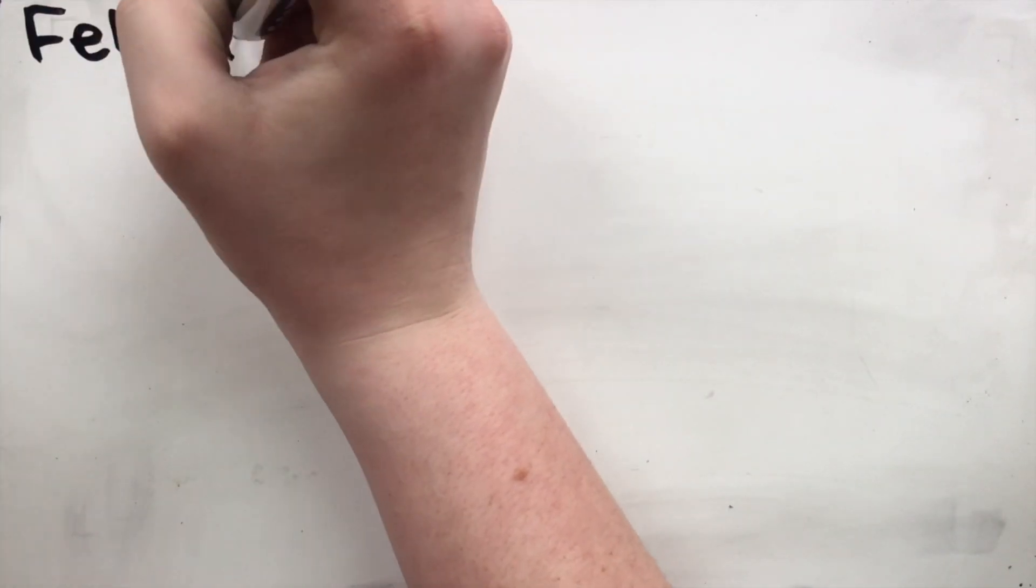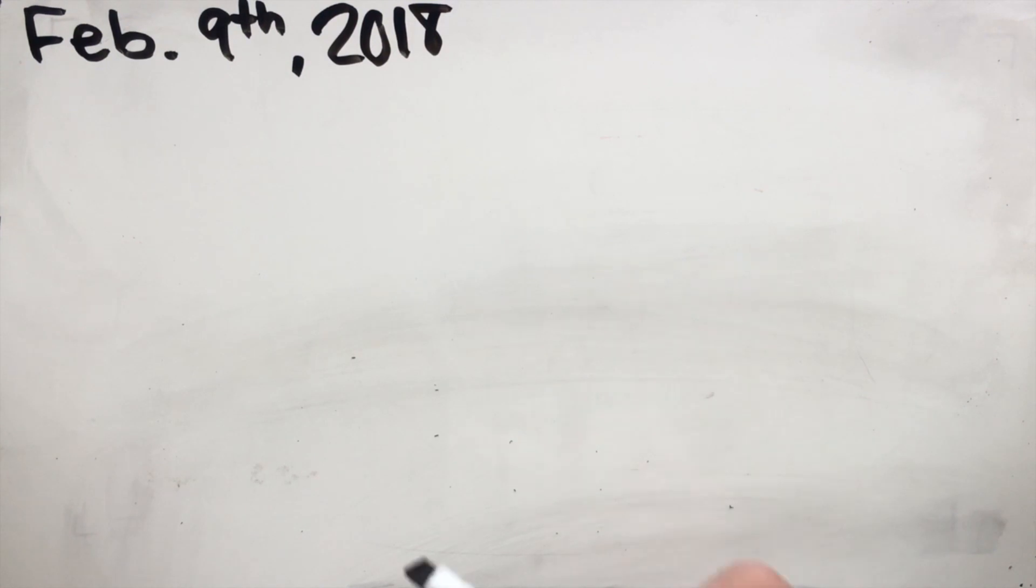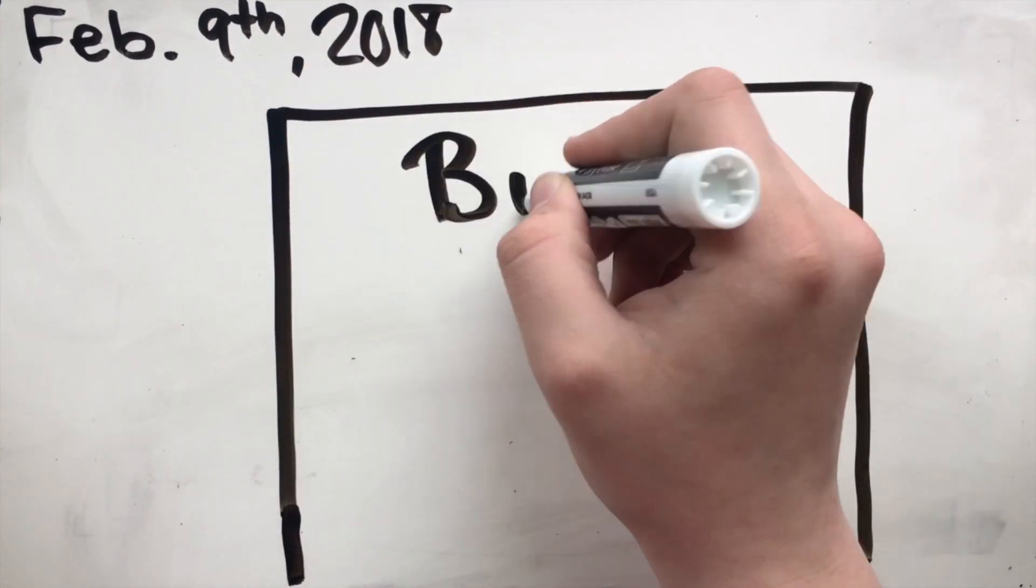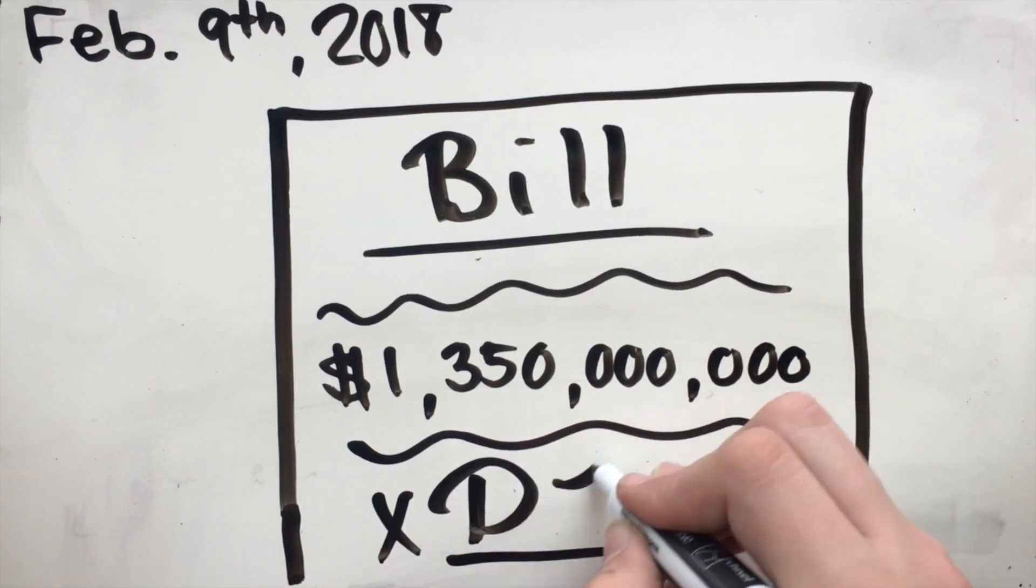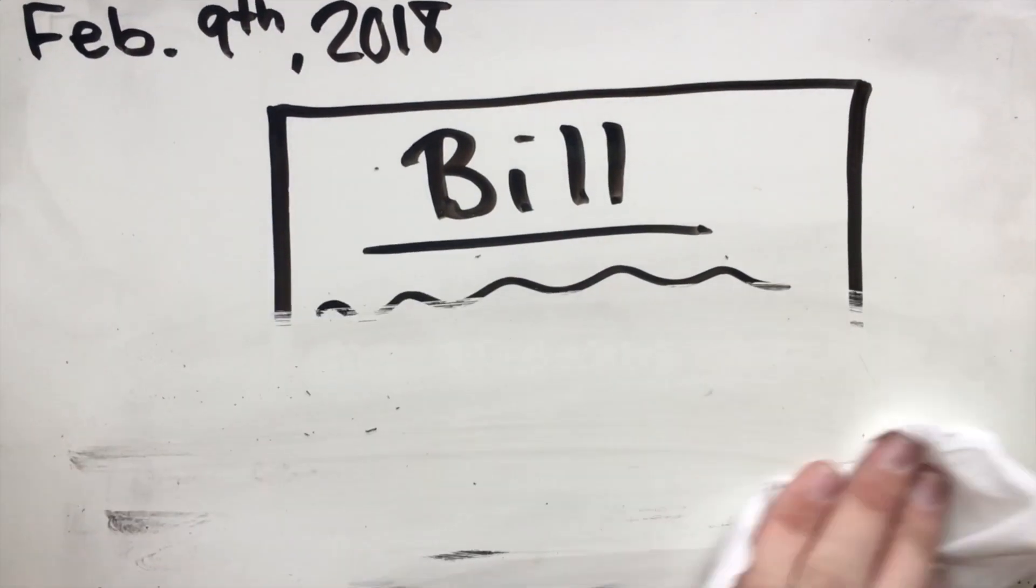On February 9th, 2018, President Trump signed a bill cutting $1.35 billion in funding for the Prevention and Public Health Fund at the CDC. This was part of the Affordable Care Act.